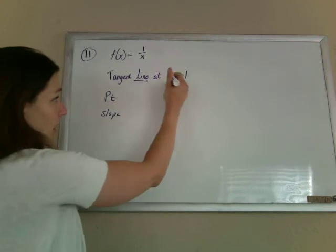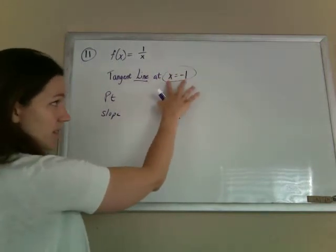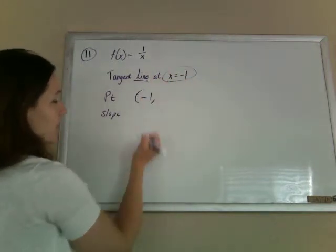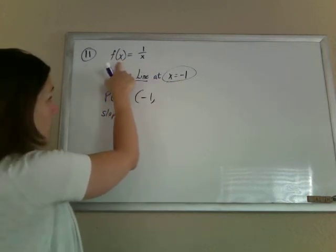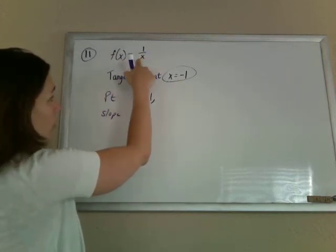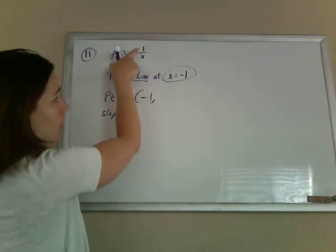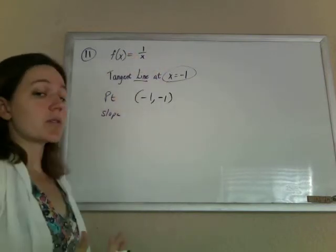So for my point, I know I want this equation when x is negative 1. So when x is negative 1, the y, the f of x, the value of the function, is 1 over negative 1. So 1 divided by negative 1 is negative 1. So there's a point.